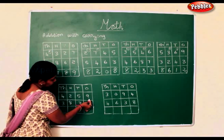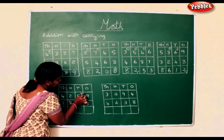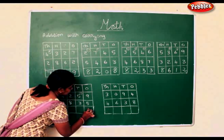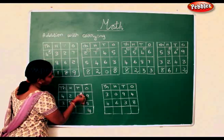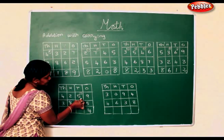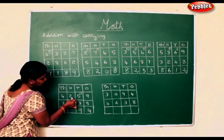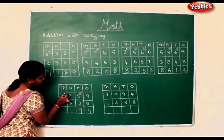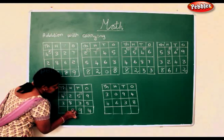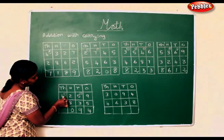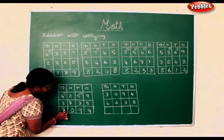Now here. 9 add 5 is 14. I am carrying this in the tens place and putting this in the ones place. 1 add 5 is 6. 6 add 3 is 9. 2 add 8 is 10. So I am carrying this over down and putting 0 here. 1 add 4 is 5. 5 add 4 is 5. 5 add 3 is 8.